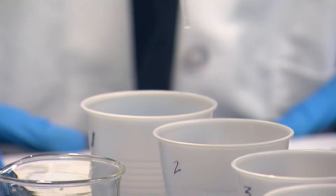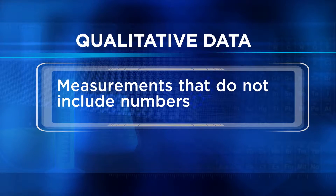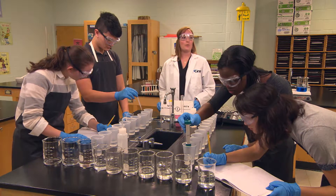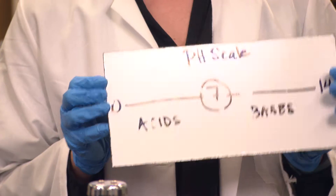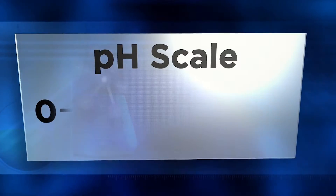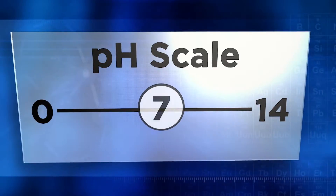Team two is recording descriptions of color changes, not numbers. When we describe results without using numbers, we call that qualitative data. Both types of data are very helpful in science. The numbers we use on the pH scale are pretty easy to understand, and we'll get more details on those numbers later. For now, just recognize that the pH scale is a set of numbers that range from 0 to 14.